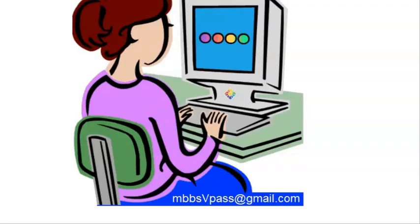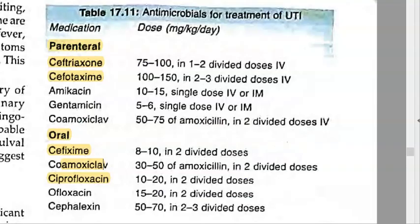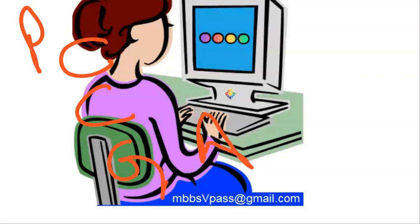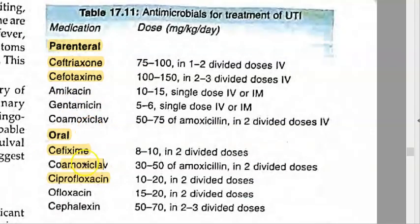What drugs will you give? We will give parenteral cephalosporin third generation. The drugs are Gentamicin, Amikacin, Ceftriaxone, and Cefotaxime. We'll write the parenteral drugs: Ceftriaxone, Cefotaxime, Gentamicin, Amikacin. This is enough.